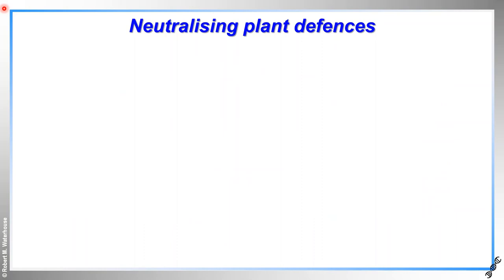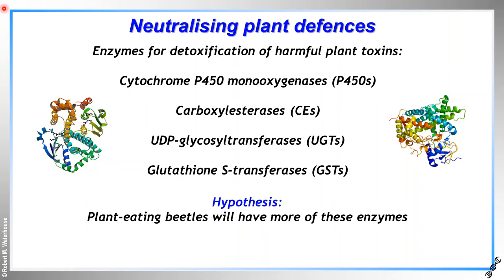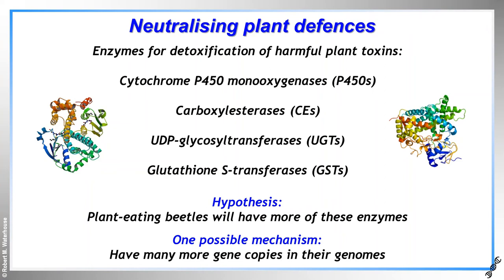Beetle responses to plant defenses are numerous and aim to neutralize or minimize their effects either directly or indirectly. Direct neutralizing is carried out by various families of detoxification enzymes, including cytochrome P450s, carboxylesterases, and glutathione S-transferases. In an arms race scenario, one hypothesis would be that to more effectively deal with harmful toxins, plant-feeding beetle species will produce many more of these enzymes than other beetles that rely on other food sources. One possible mechanism to achieve this would be to have many more copies in their genomes of the genes encoding these enzymes.